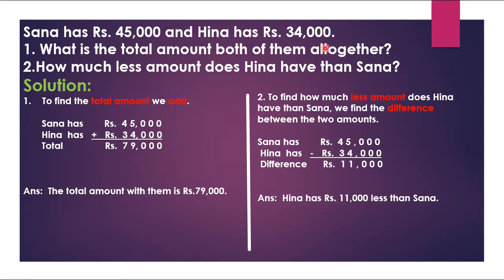...Henna has rupees 34,000. So what is the total amount both of them all together? That is part one. And part two is: how much less amount does Henna have than Sana? So first of all we have to solve part number one.